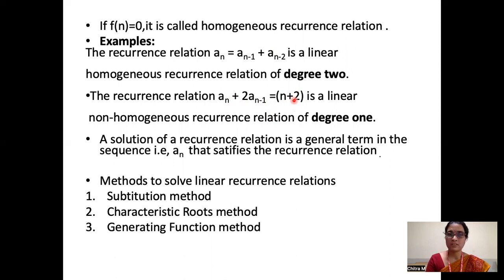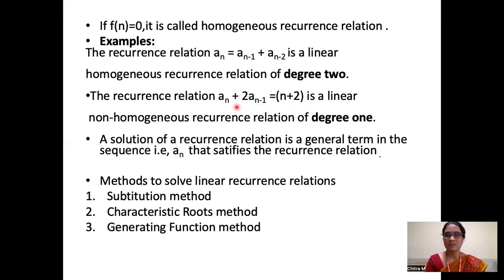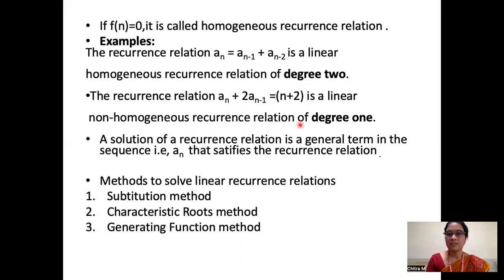What is the degree of this non-homogeneous recurrence relation? It is the difference between the highest and lowest subscripts. The highest subscript is n and the smallest is n minus 1, so n minus (n minus 1) equals 1. The degree of this recurrence relation is 1.